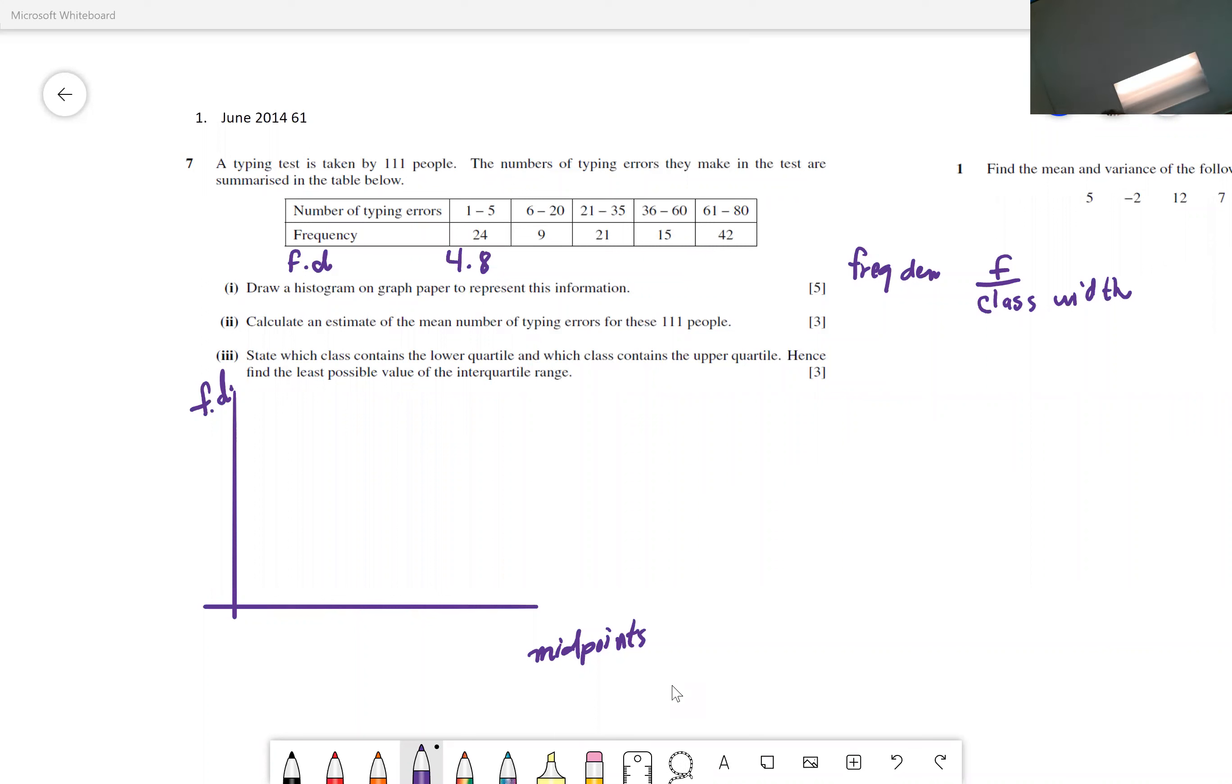So the next one will be nine. And what's the class width for the second class? You take 21 and subtract six, you get 15. So how do you do the class width? You subtract two consecutive lower or upper class limits. Take 35 and subtract 20, that gives you 15. And if you take 21 subtract six, you get 15.